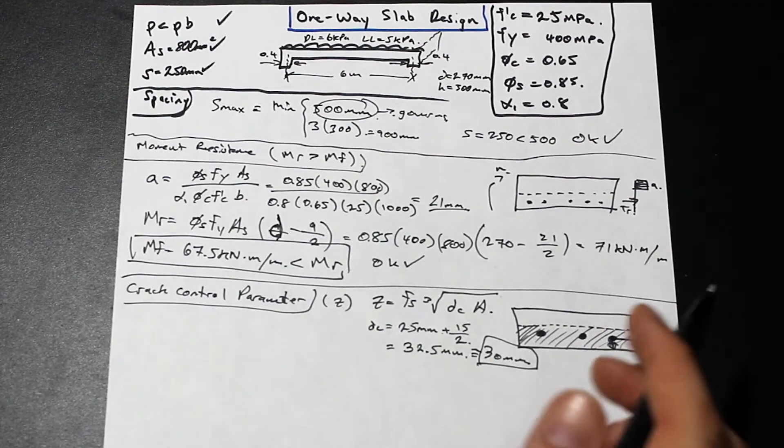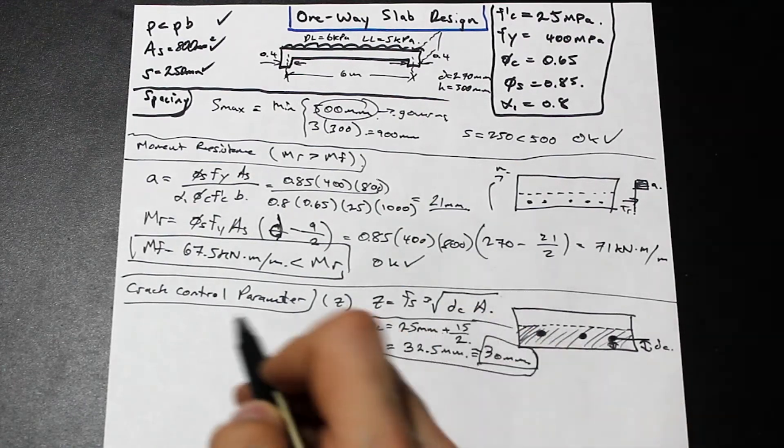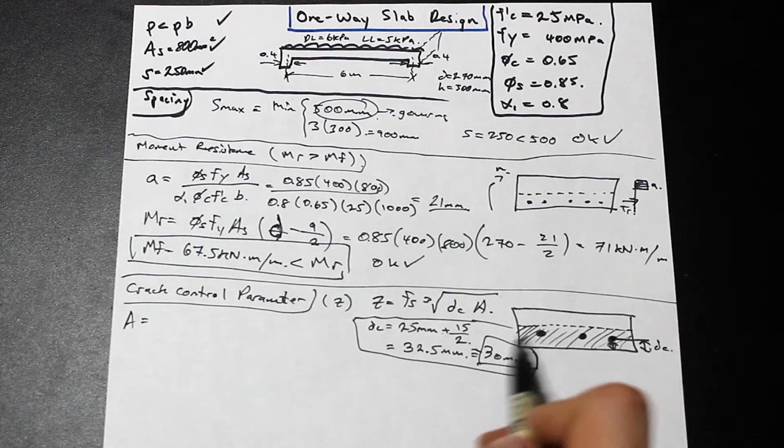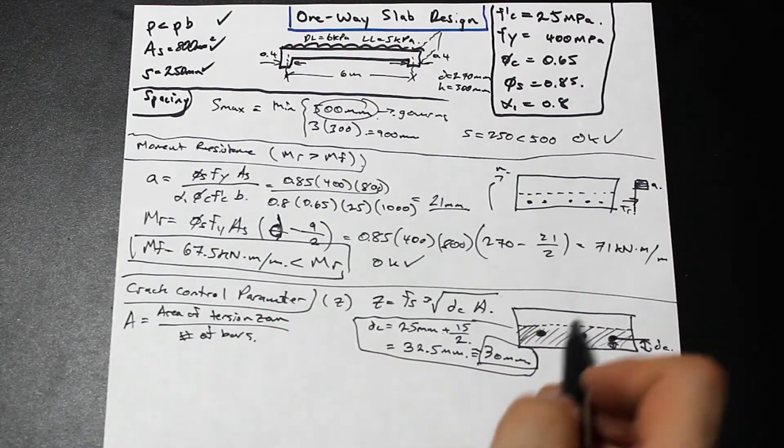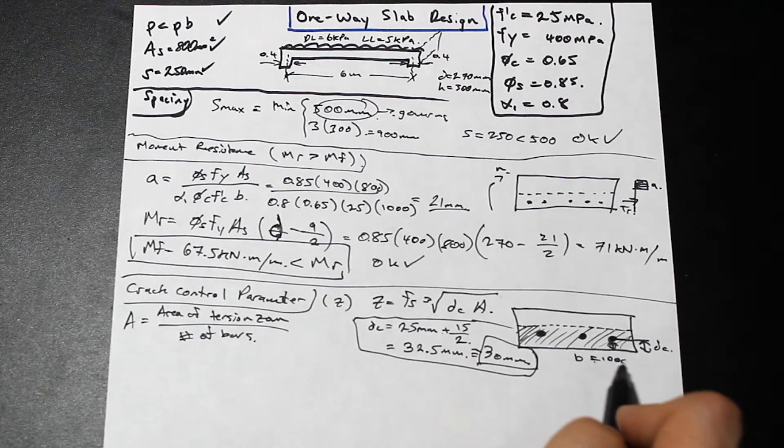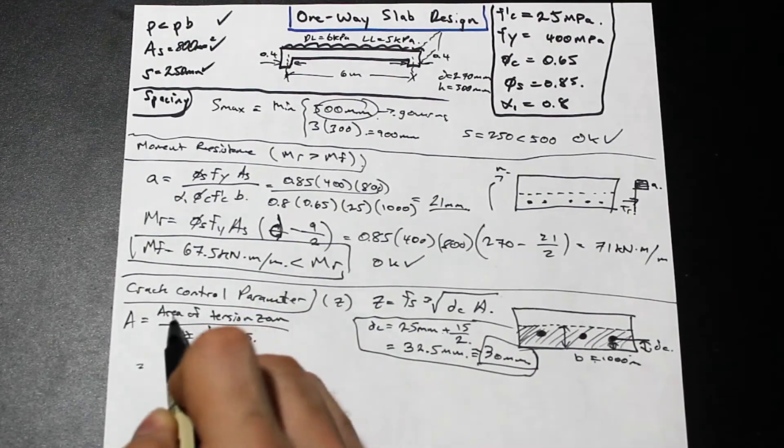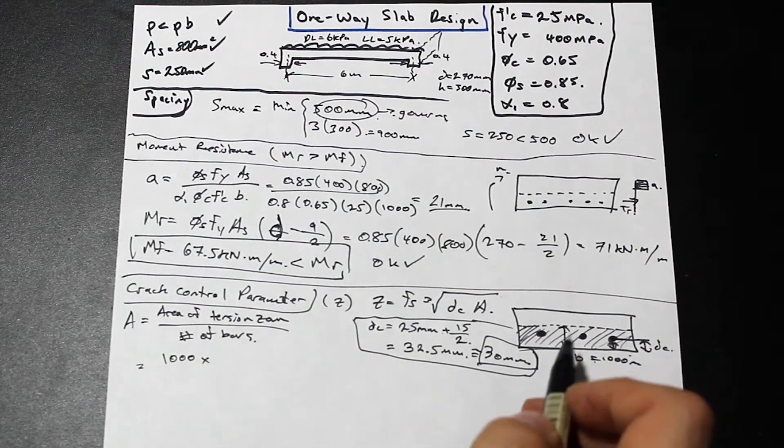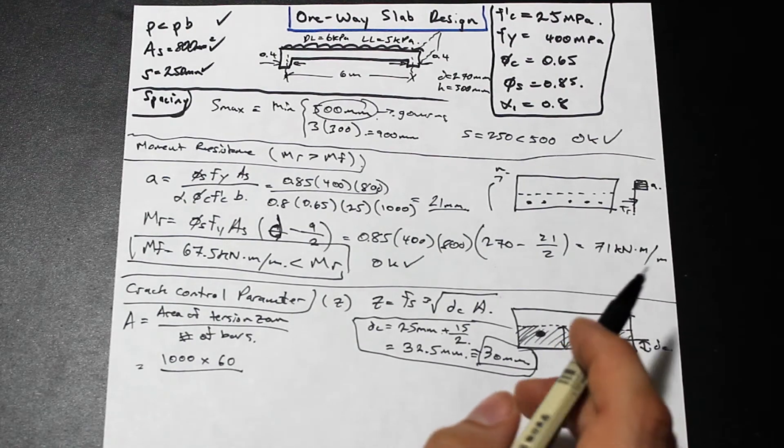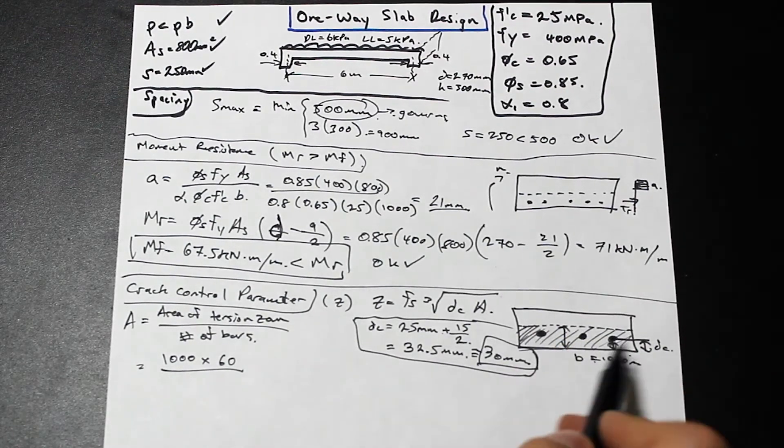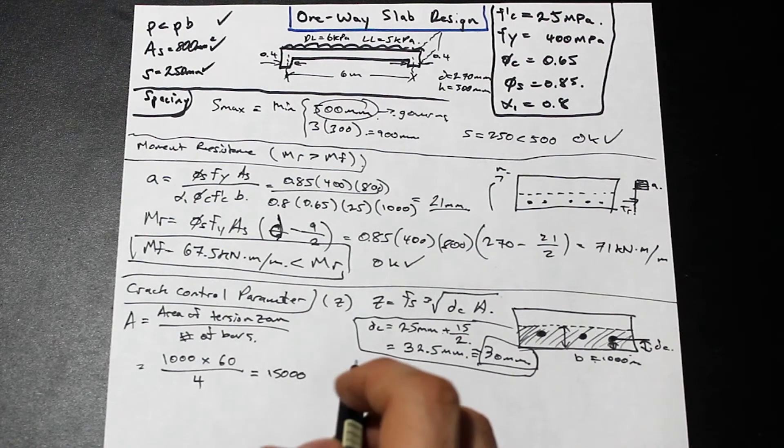Actually we can just get this by taking the height of the slab and subtracting our effective depth. Now that we have dc, how do we find a? Well, a is simply the area of the tension zone divided by the number of bars. What's the area of the tension zone? This is our b, and we know that our b is equal to 1,000 millimeters. This is the one meter strip here, and this is simply dc times 2. So we have area of tension zone is going to be b, which is 1,000, times dc times 2, which is 60, divided by the number of bars. From the last question, since our spacing is 250, we have 4 bars per meter. We just go ahead and calculate this, we're going to get 15,000 millimeters squared.